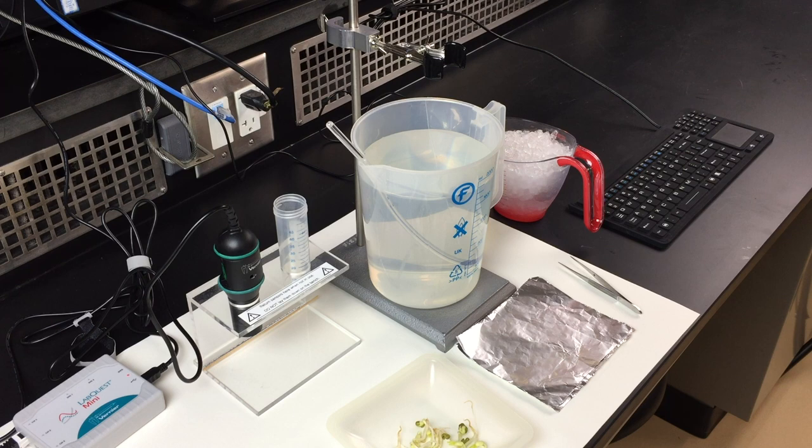Measure out approximately 4 grams of mung beans. It doesn't have to be exactly 4 grams. Record down the exact weight of your mung beans into your lab manual. You will need this value later on for the calculations of the metabolic rate.